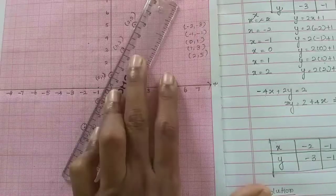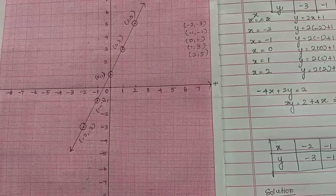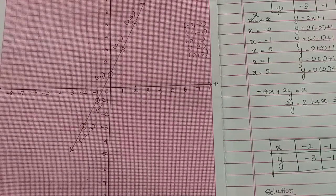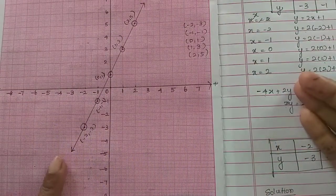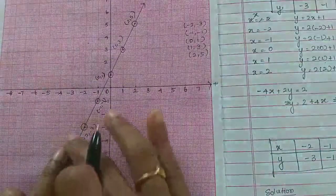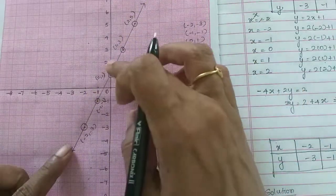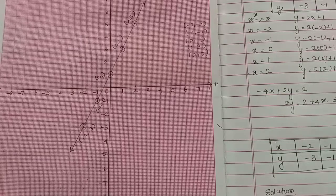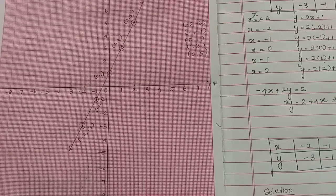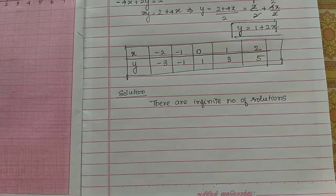Now we join the points. We join them on this scale — the book uses a red line and a blue line, but we will use a pencil. Looking at the second equation's line, the two lines meet completely. If you look at this, the two lines are the same, giving infinitely many solutions. The solution is: there are an infinite number of solutions.